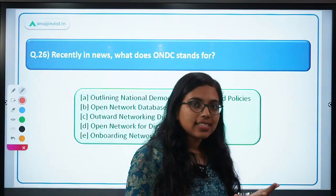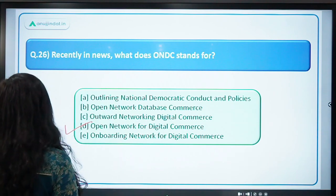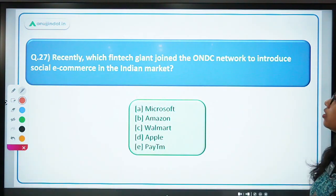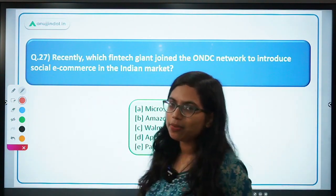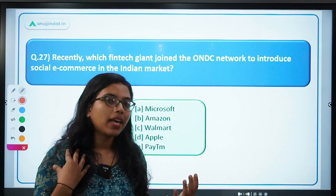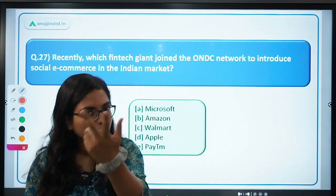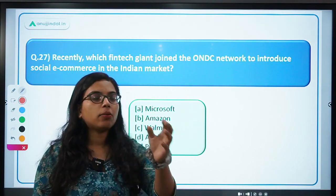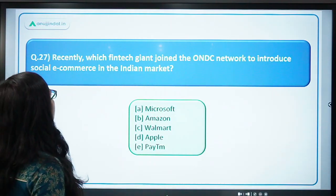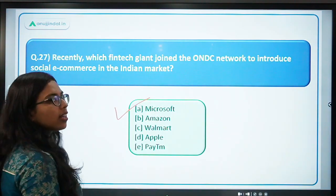Recently in news: what does ONDC stand for? Answer: Open Network for Digital Commerce. ONDC is basically a platform whereby all sellers and buyers will have one platform to interact — whether it is Myntra, Flipkart, Amazon, or Meesho selling a product, you can purchase from any of them using the ONDC platform. Now they are asking: which fintech giant was the first to join the ONDC network? It was none other than Microsoft — Microsoft joined to take the first-mover advantage.